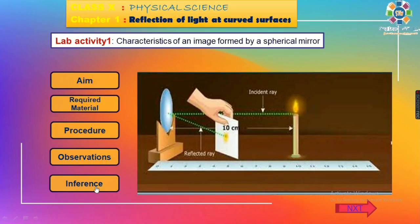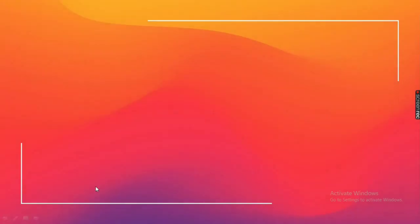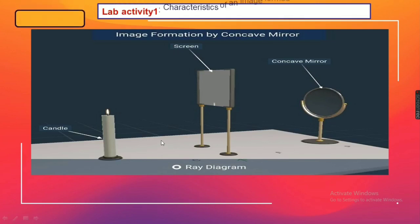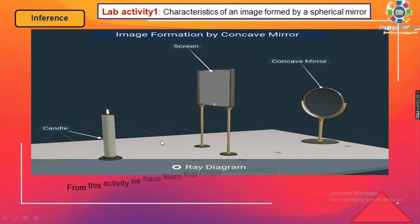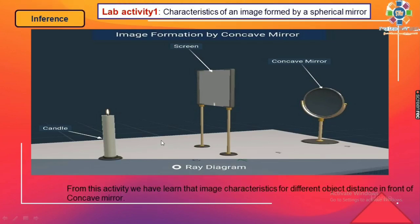Based on these observations, we can infer from this lab activity that we have learned the image characteristics for different object distances in front of a concave mirror. By changing the object distances, we get different image distances and also different image characteristics, all of which are discussed in this activity.